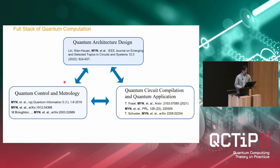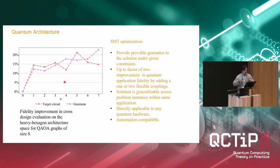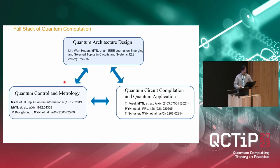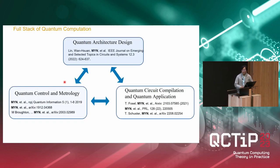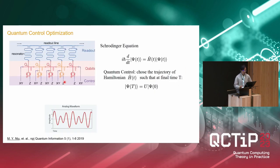To summarize the SMT solver approach: this optimizer provides a very useful performance guarantee, is directly applicable to different types of systems, and is fully compatible with automation. It has been used in classical software verification and other genres of electronic design automation. That concludes my first section on quantum architecture optimization. I will now move one layer higher on the quantum stack to quantum control and metrology.